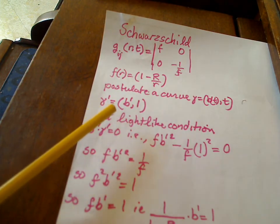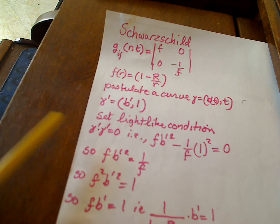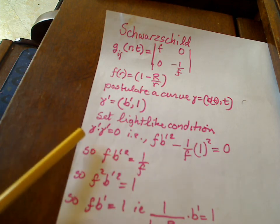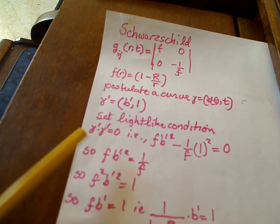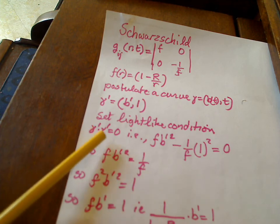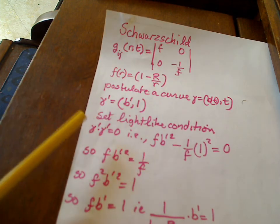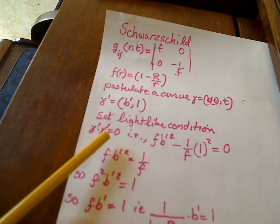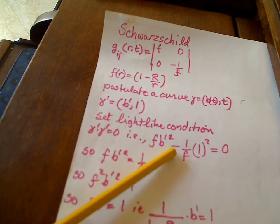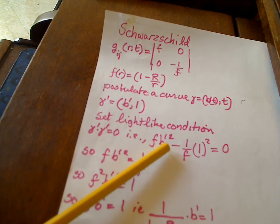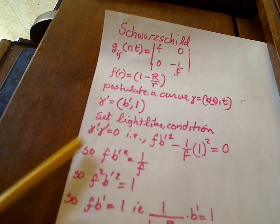Now set the light-like condition, in other words set γ' dotted with γ' using this metric, set that to be zero. When I do, we get this right here.